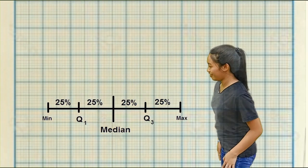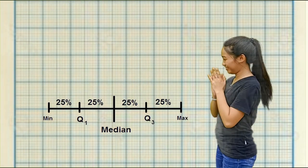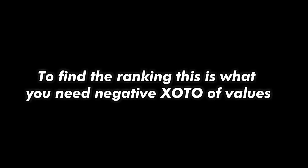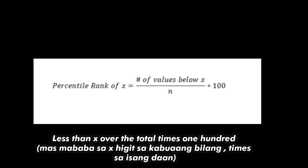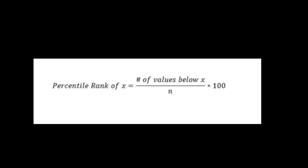To find the ranking, this is what you need: number of values less than X, over the total, times 100.